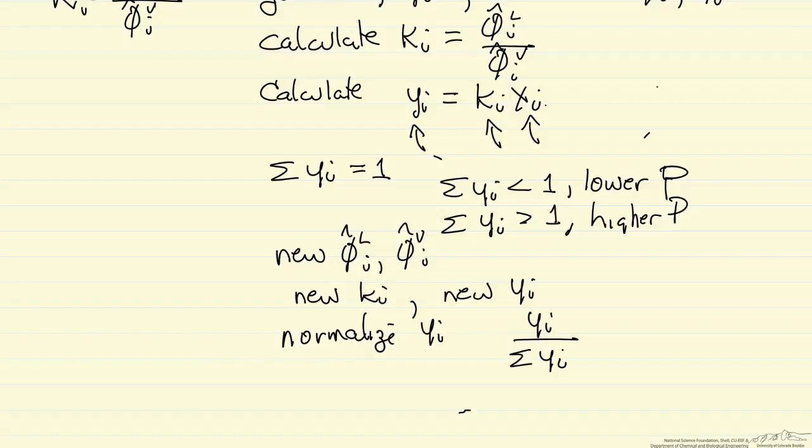We get new fugacity coefficients. If they don't sum to 1 when we calculate the new yi values, then we go back and adjust pressures. And we'll continue that loop until the sum of the yi equals 1. And then we would have determined the pressure and the yi values in vapor-liquid equilibrium.